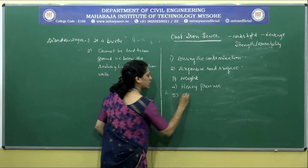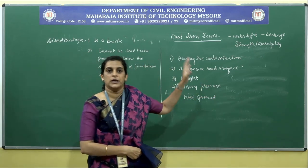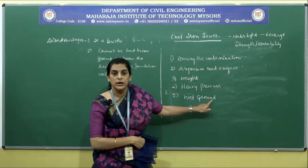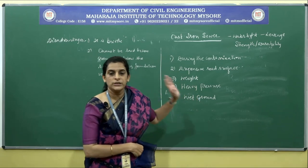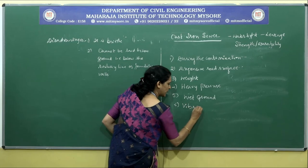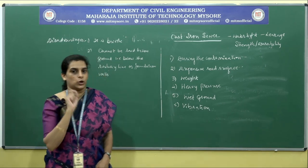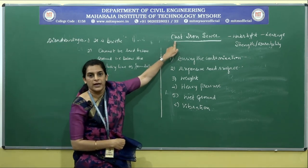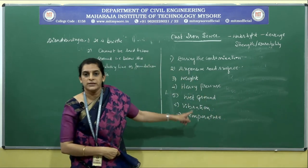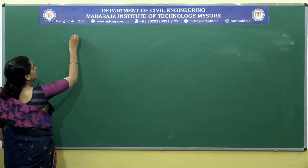Next is wet ground. When the selected locality has wet ground, cast iron is chosen to reduce the risk of infiltration. Next is vibration — whenever there are high chances of movement and shock loading at a location, selection of cast iron is very appropriate. Finally, temperature — when there are large differences in temperature, we can adopt cast iron sewer at that location.